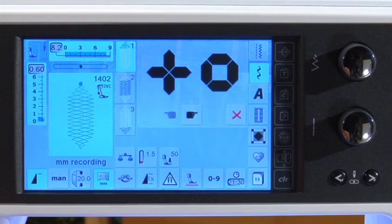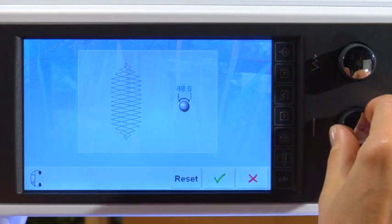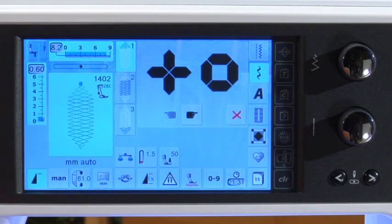To program the length of the tapered stitch, touch the tapered length icon and a special screen appears. Turn the stitch width or stitch length knob to program the finished length of the stitch from tapered end to end. Approve the length with the green check and exit the screen.